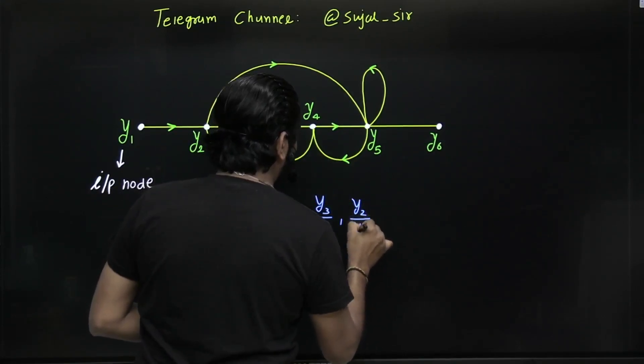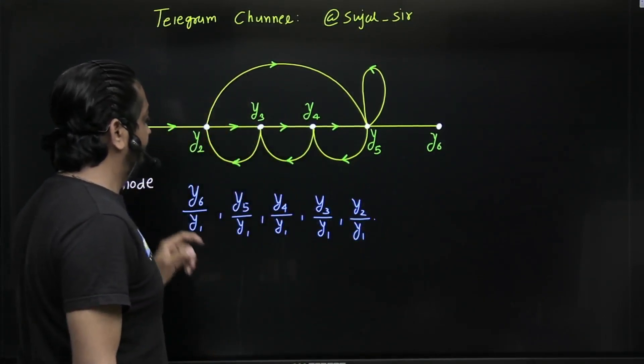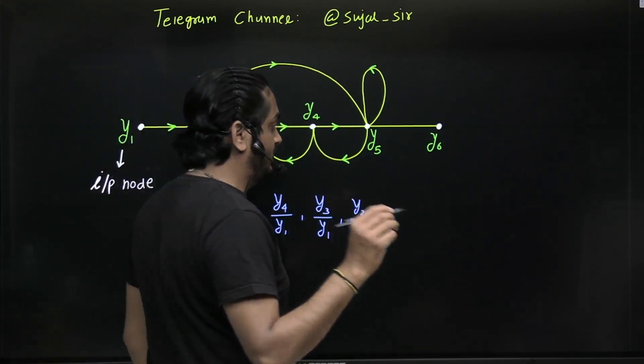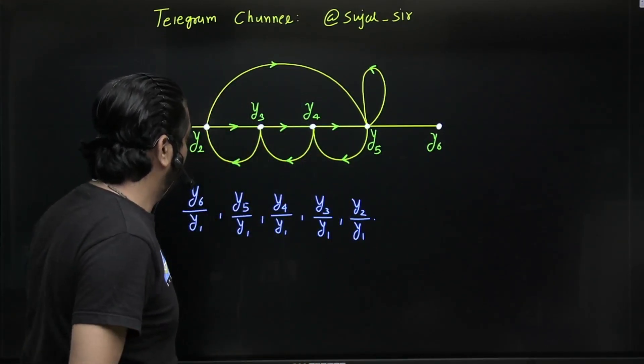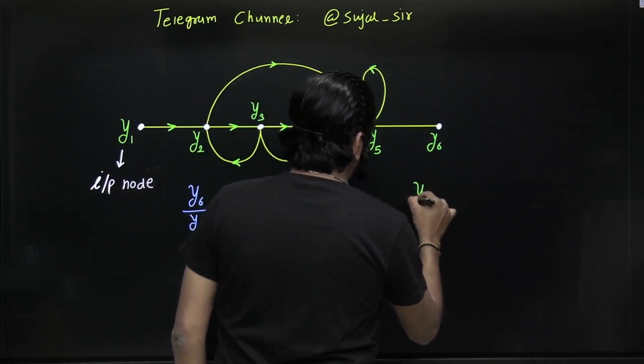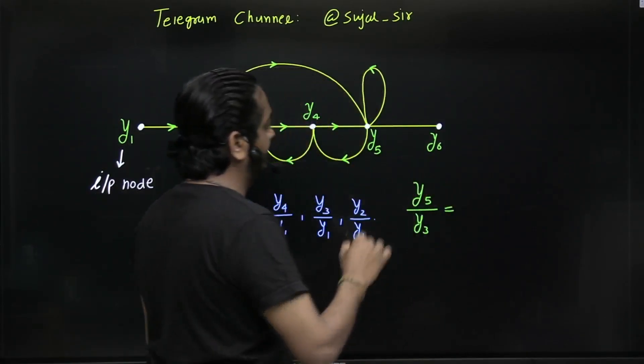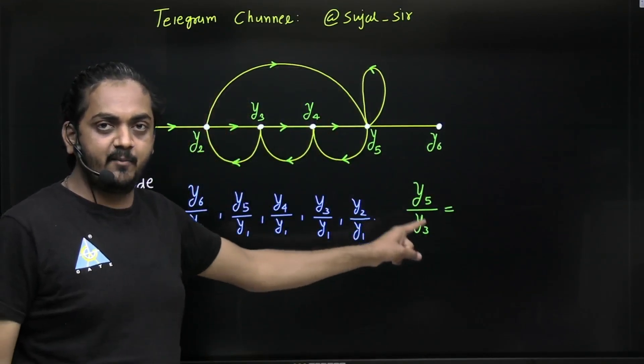Suppose you want to find y5 by y3, then directly message gain formula is not applicable for this. What you have to do?